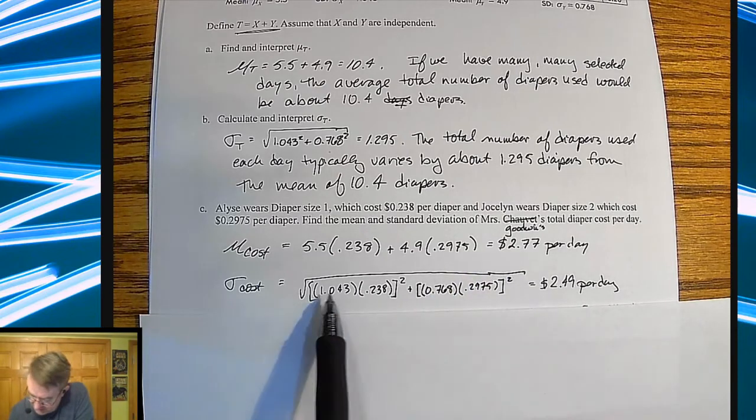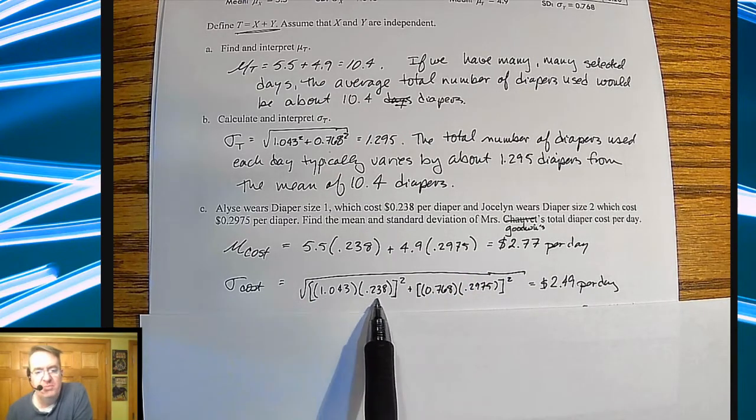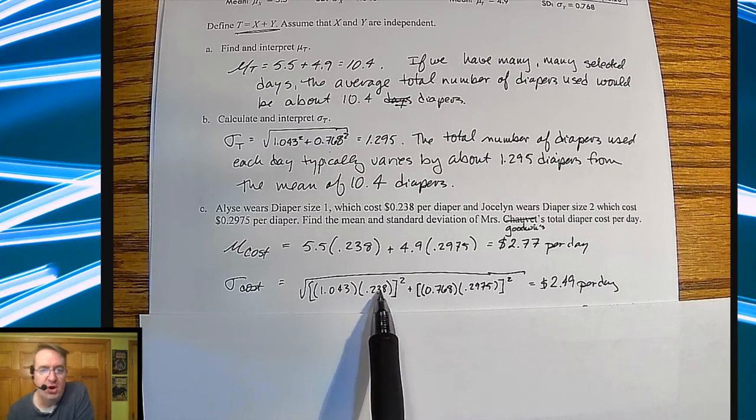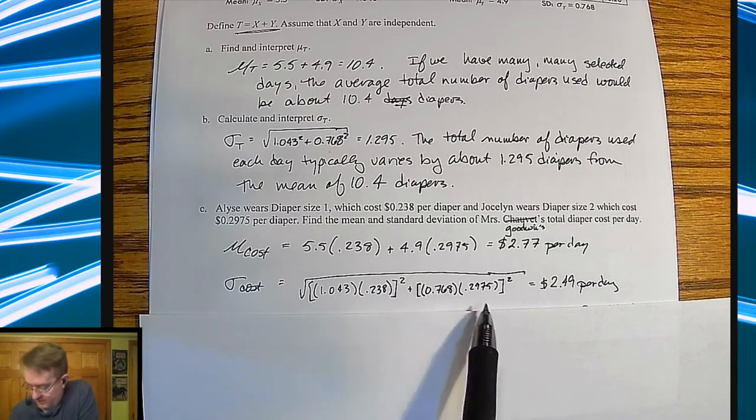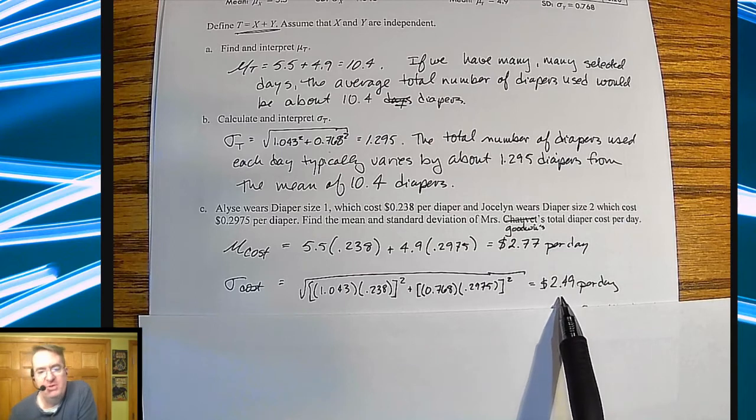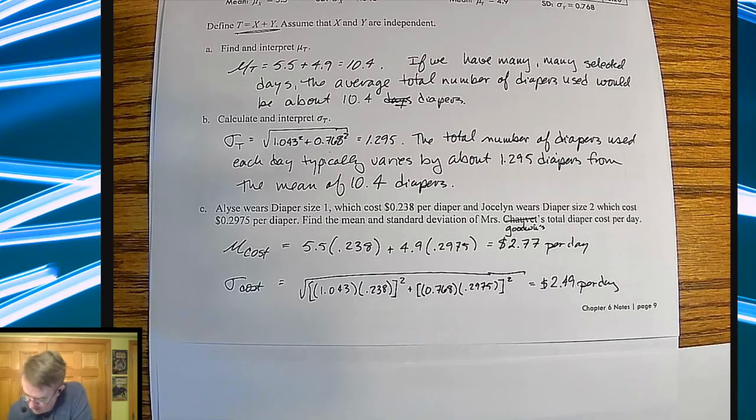And then the variance, you're going to go through and do the exact same thing. So I'm going to multiply this out. So I'm going to figure out what the standard deviation cost would be for Elise and for Jocelyn, square them and take the square root. And that means it's going to vary as much by $2.49 per day. Okay. And that's it.